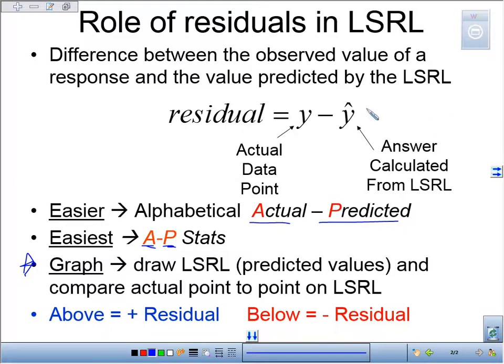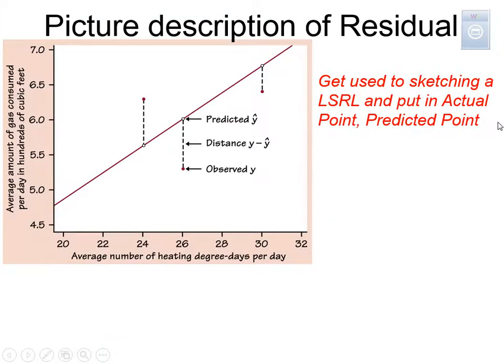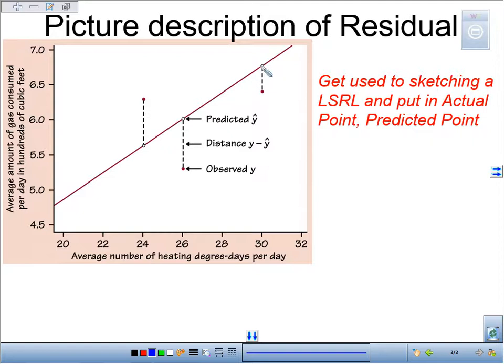Now, it's a little easier to show you right here. Here's my prediction line. Last class we saw how these were squares that came out like this. This right here represents a positive residual. Here's my actual, here's my predicted, and this is for 24 heating degree days per day.